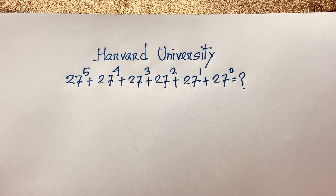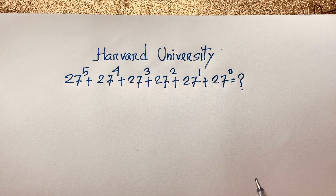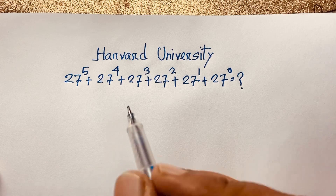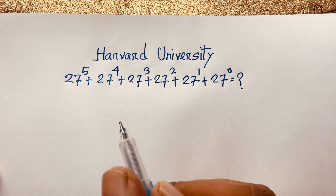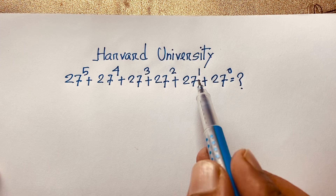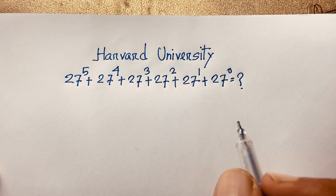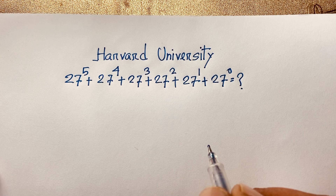Hello everyone. In this video we have solved a nice math problem without a calculator. The question is: 27 power 5 plus 27 power 4 plus 27 power 3 plus 27 power 2 plus 27 power 1 plus 27 power 0 is equal to what? How to solve this question without a calculator?